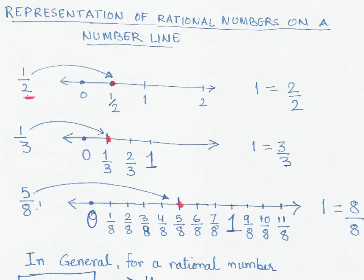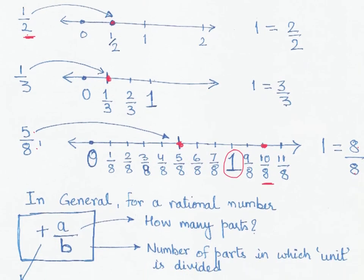You could also use this for other values. For example, to represent 10/8, which is greater than one, you go all the way past one and locate the tenth point. Remember, the one shown here can be written as 8/8. This leads us to generalize the observation of representing rational numbers on a number line.